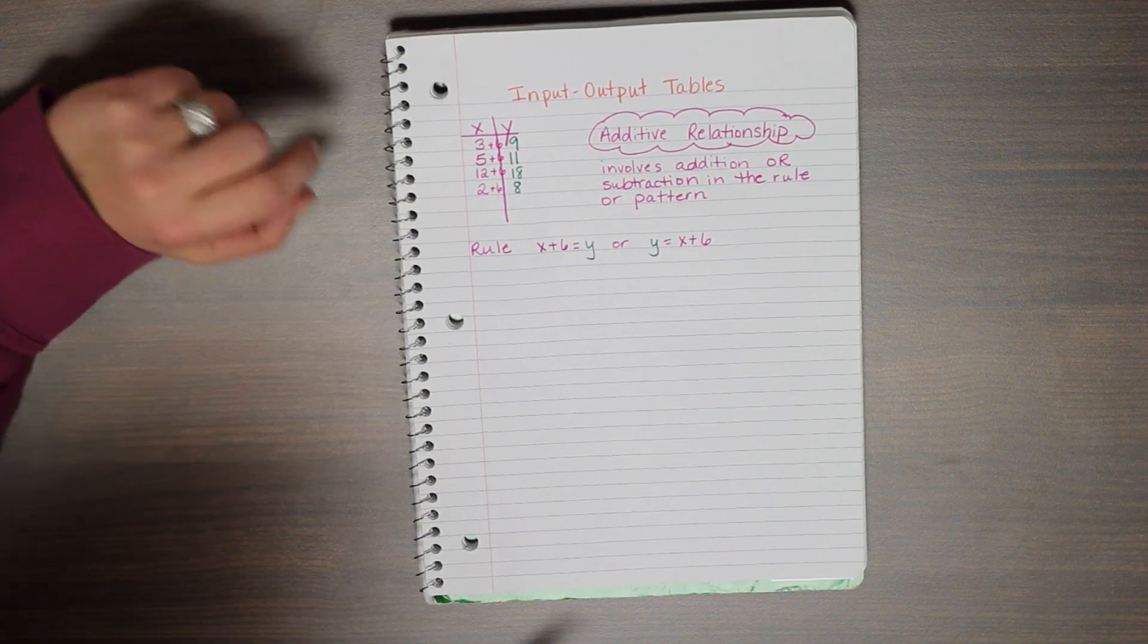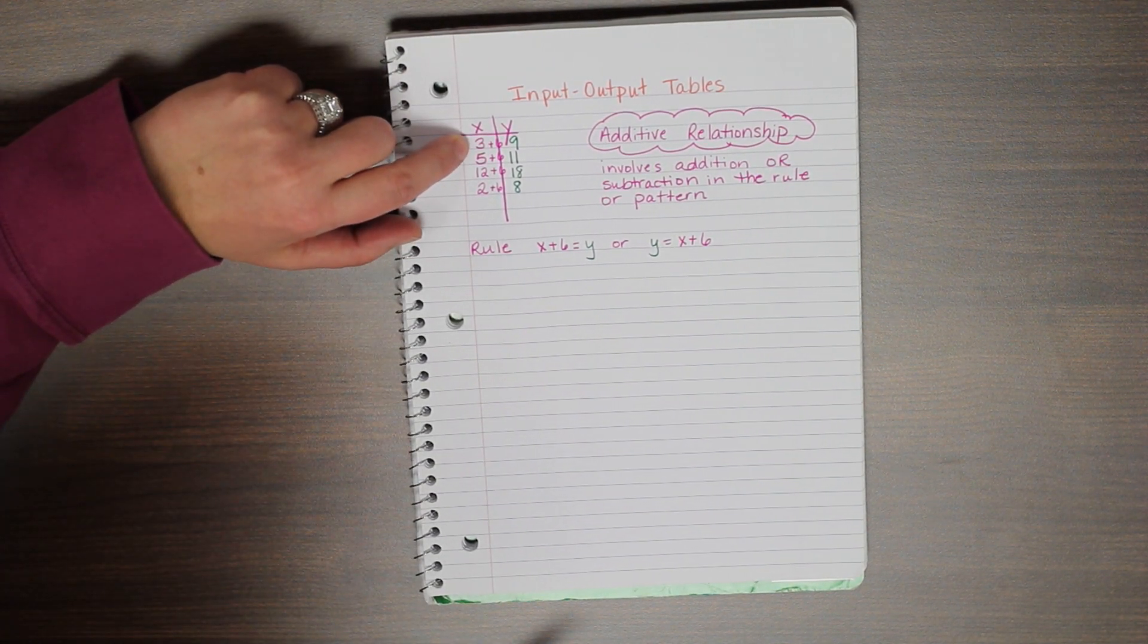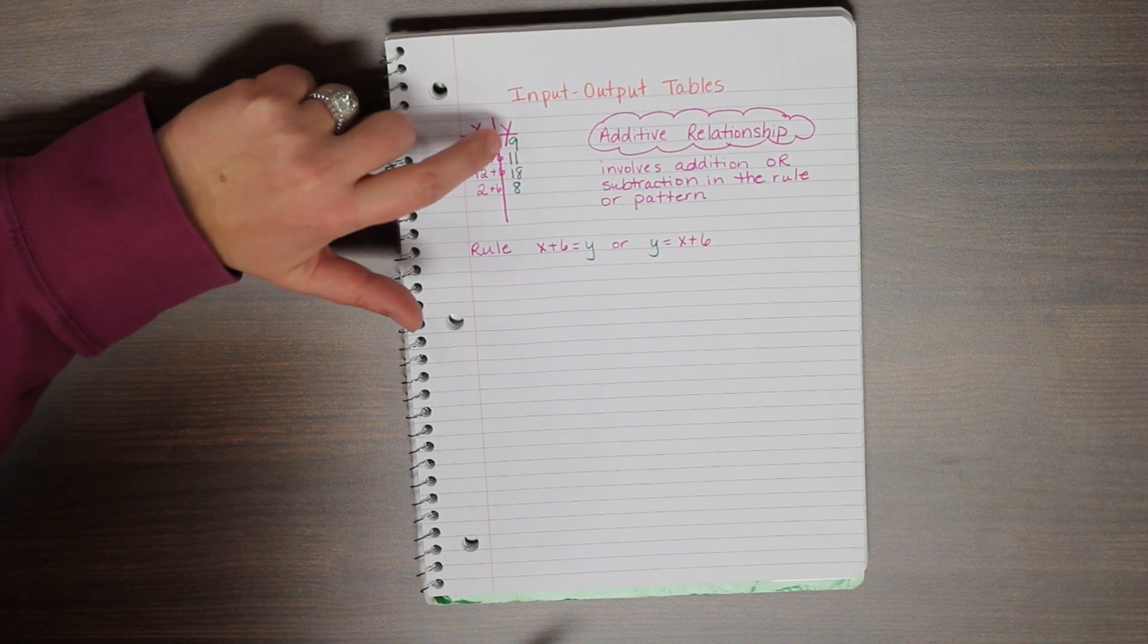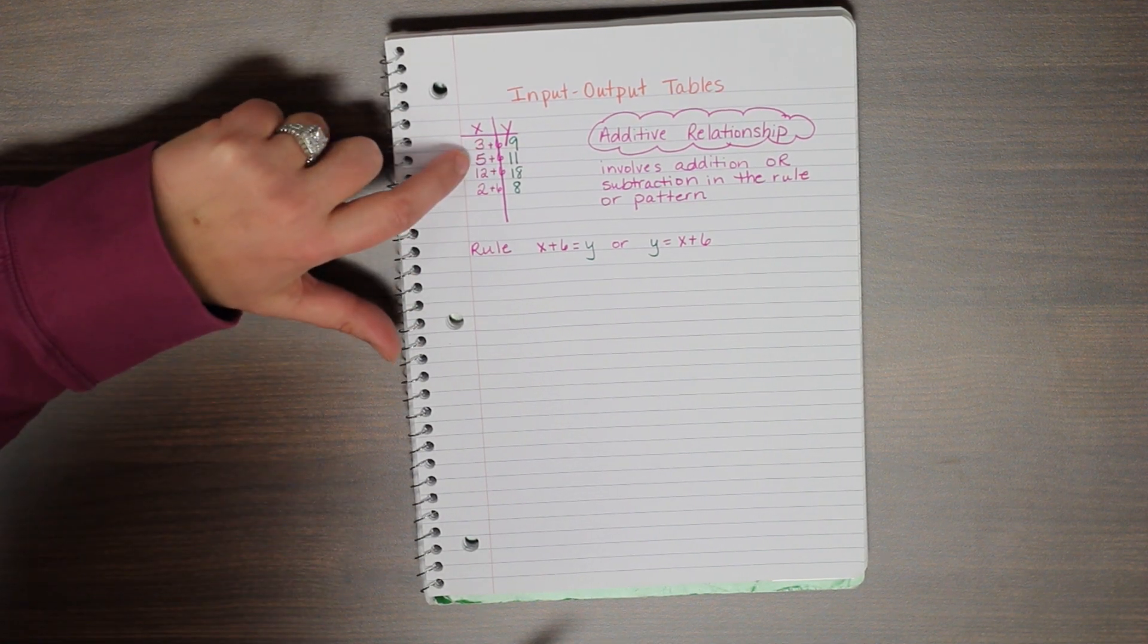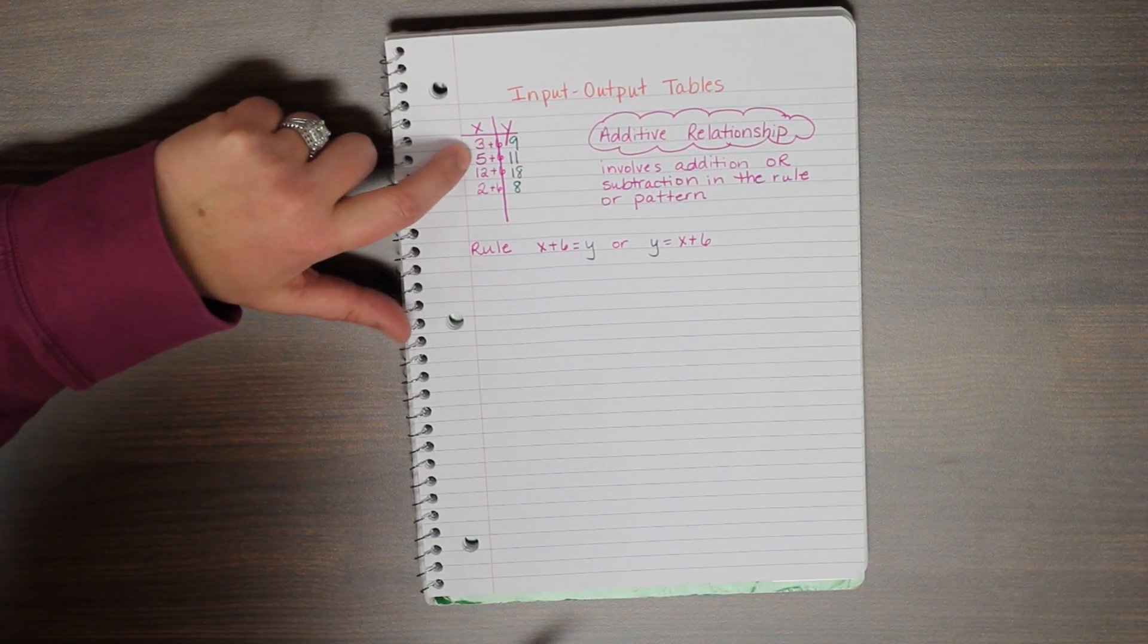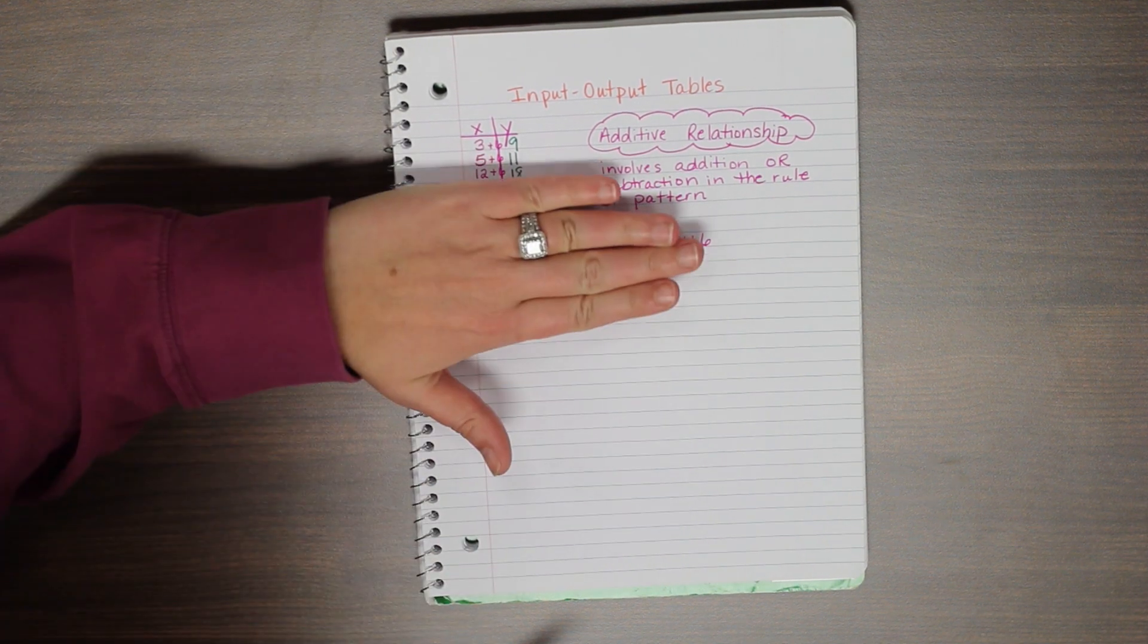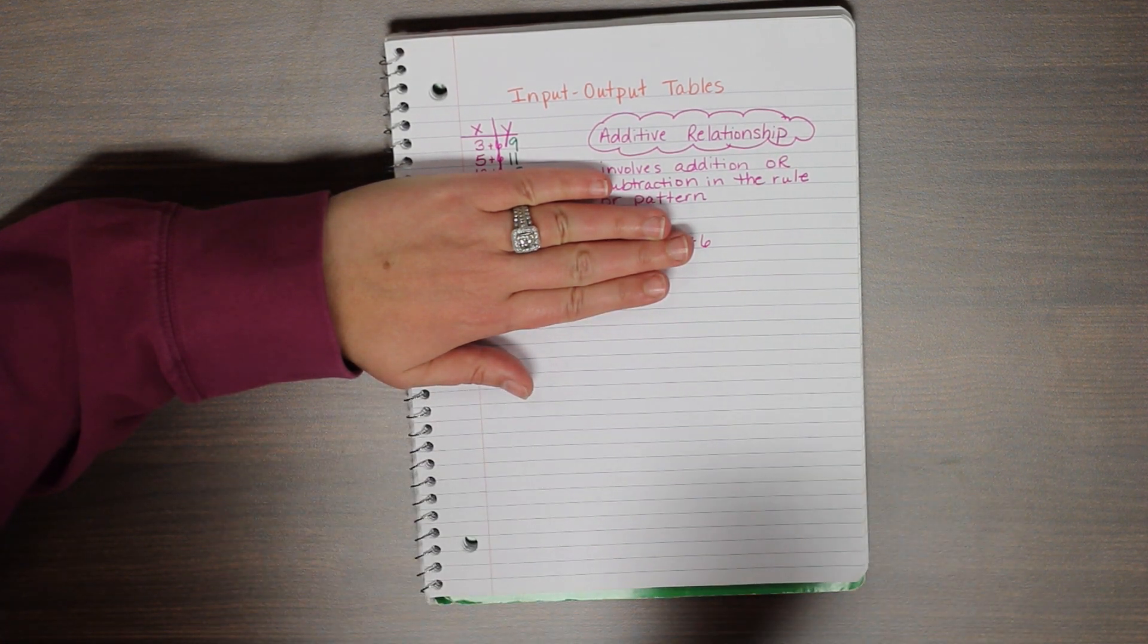It's very important that we don't do a common mistake. Students want to look for a pattern going down, like 3 plus 2 is 5 and 9 plus 2 is 11. Well, that's great in that first one, but you'll notice it doesn't work if I continue. 5 plus 2 is not 12 and 11 plus 2 is not 18. So it's very important that I'm looking at the relationship going across here from x to y.